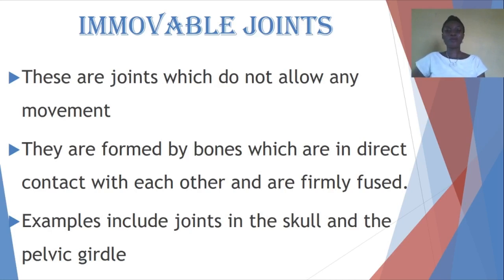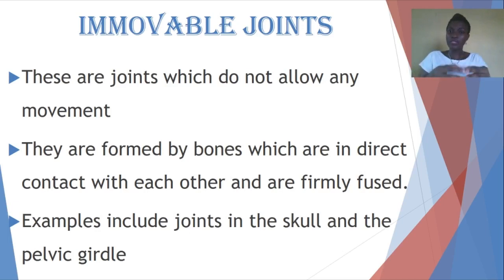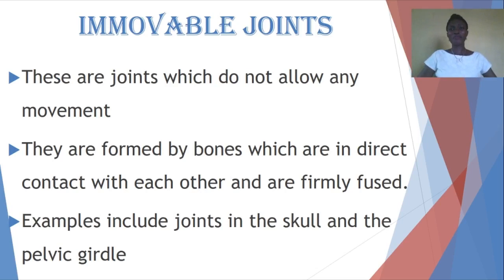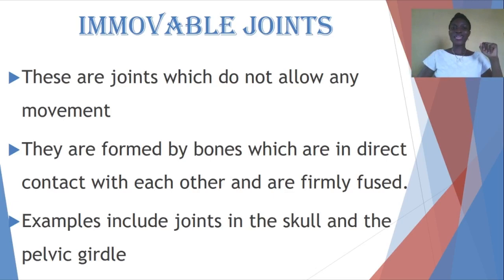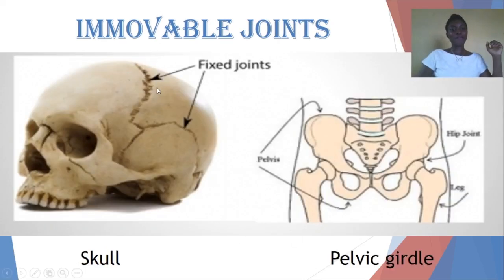The next type is the immovable joint. Opposite to movable joints, immovable joints do not allow movement. They are formed from bones which are in direct contact and are fused together. An example is the pelvic girdle — those joints cannot move in any plane; they are fixed. Another example is the skull — the bones which form the skull are fixed and cannot slide over each other. In the pelvis, the pubis, ileum, and ischium forming the pelvic girdle are all fixed.